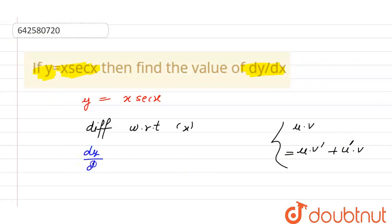So, dy divided by dx equals first function as is, times differentiation of second. Secant x will be secant x tan x. Differentiation of secant x is secant x tan x.